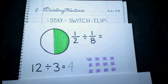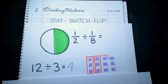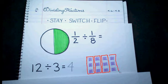So I have a total of 12 squares, and dividing that by 3 can mean I'm making groups of 3. So how many groups will that be? After making groups of 3, I have 1, 2, 3, 4 groups.